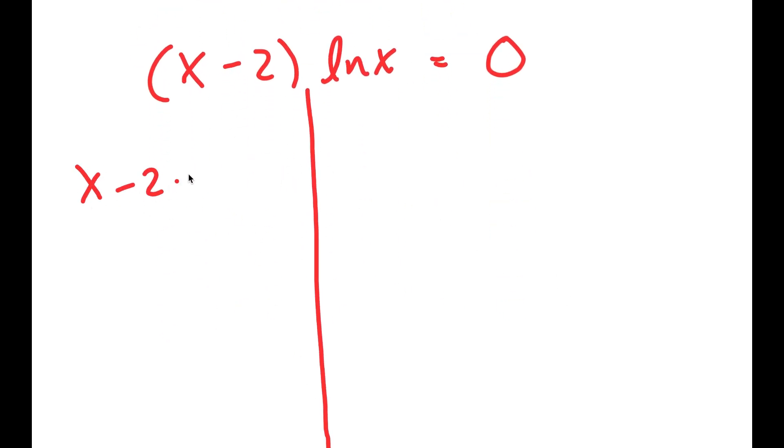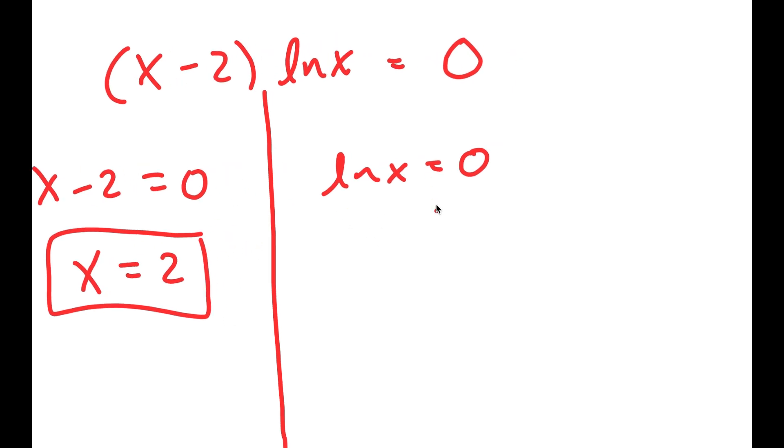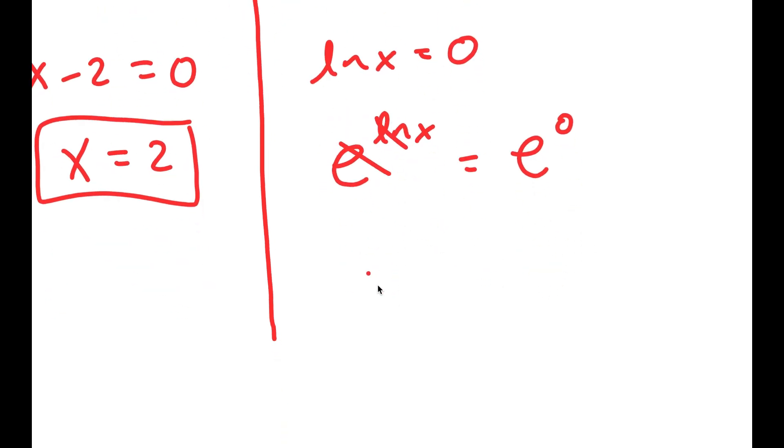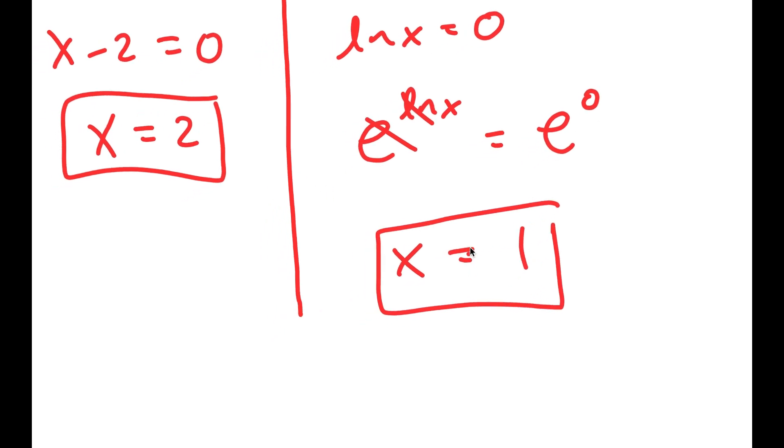So now I get two equations. I get x minus 2 equals 0, and ln of x is equal to 0. x minus 2 is equal to 0 simply means x equals 2. That's a simple equation. And for ln of x equals 0, I'm going to take e to the power of both sides. These two cancel out on my left-hand side, so I'm left with x is equal to e to the power of 0, which is 1. So these are my two solutions.